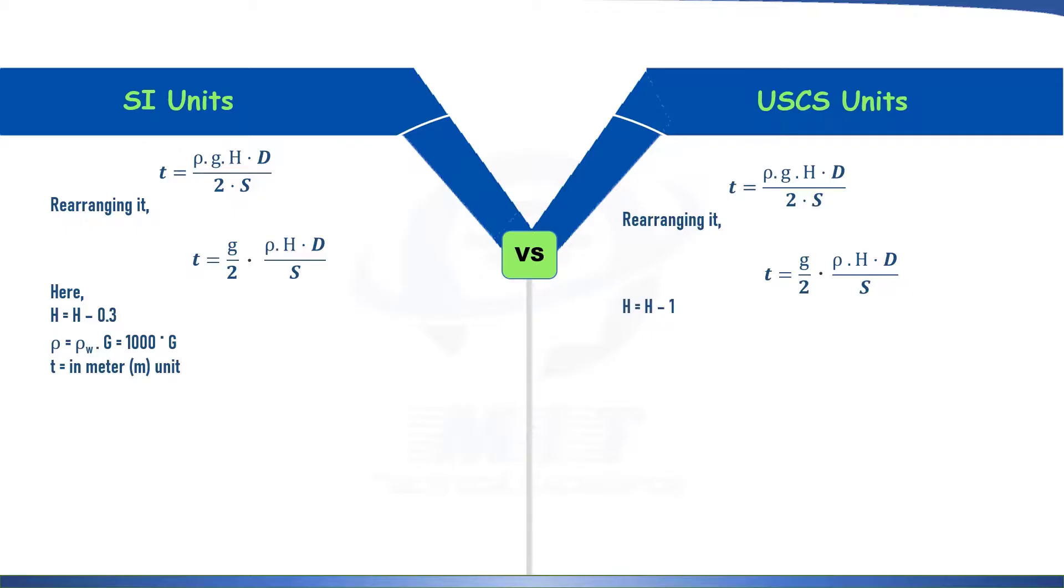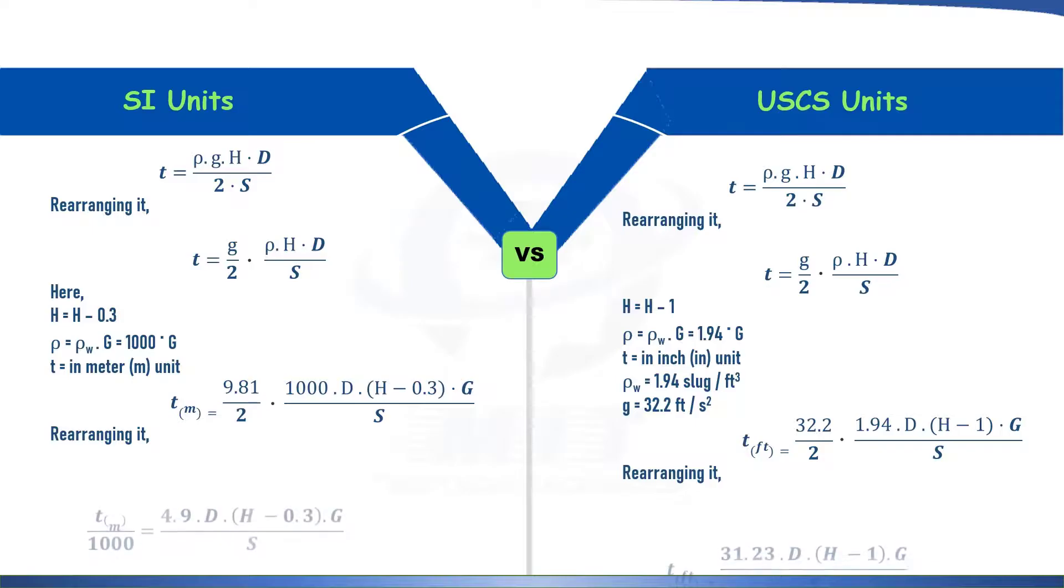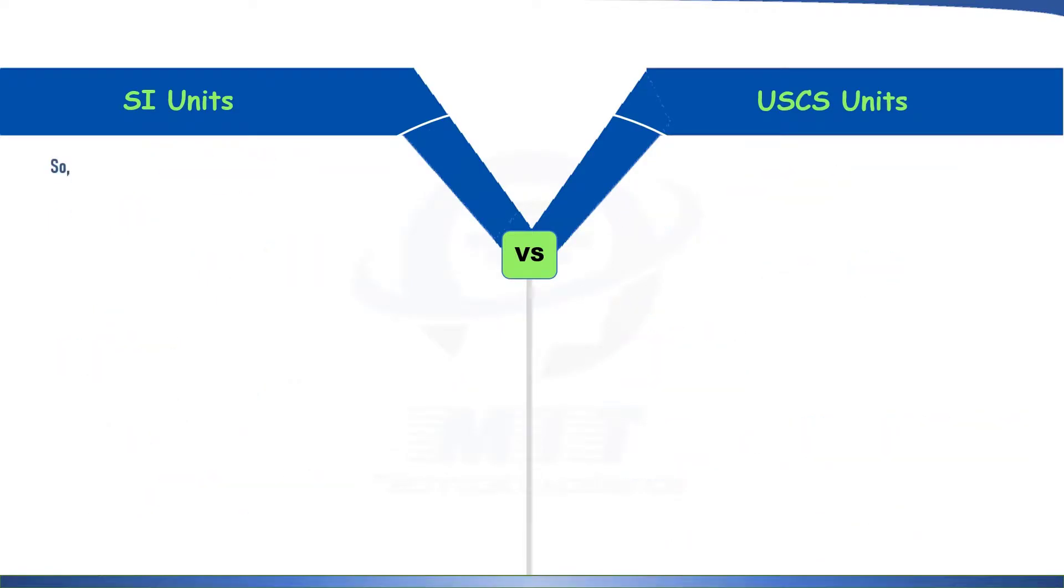Here T is in units of meter. For USCS unit, H equal to H minus 1 and density of water here is 1.94 slug per feet cube and here thickness is in unit of inches. For USCS unit, G equal to 32.2 feet per second square and for SI unit, the value of small g is 9.81. So putting this in formula, we will get this equation and after arranging it again, we get the following equation. You can notice here the thickness is still in meter for SI units and it is in feet for USCS units.